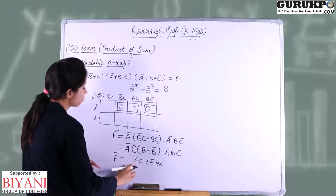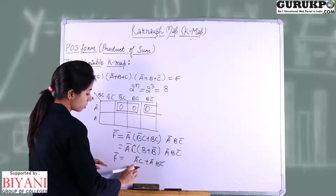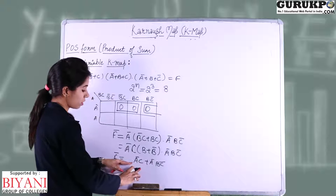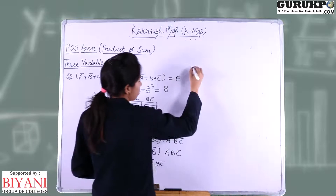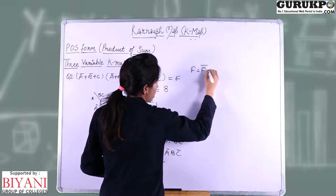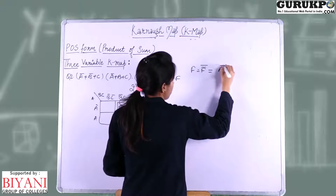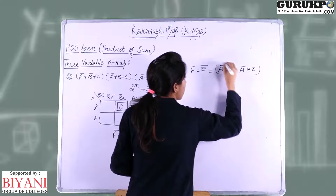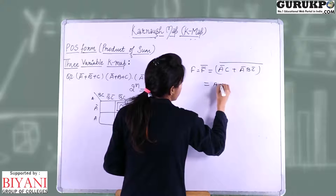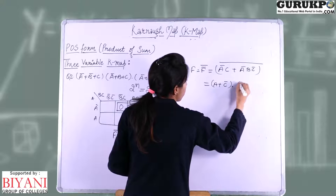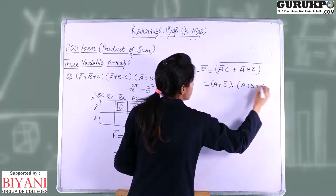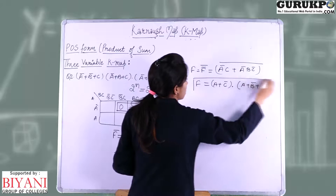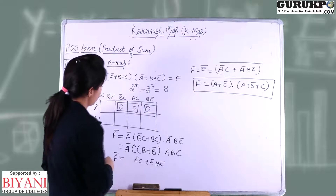The function is currently in the form of sum of product, but we want product of sum, so we apply De Morgan's law. f = (f-bar)-bar = (A-bar·C plus A-bar·B·C-bar)-bar, which gives us (A plus C-bar) dot (A plus B-bar plus C). So our reduced expression is this product of sum form.